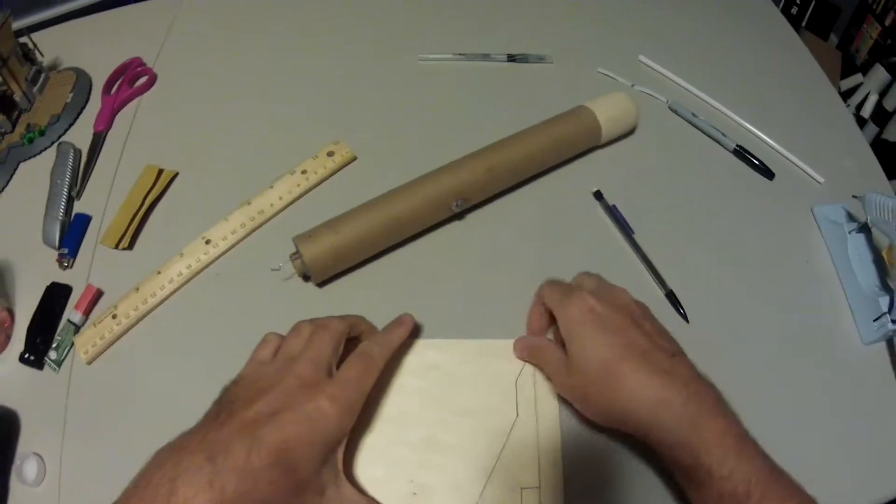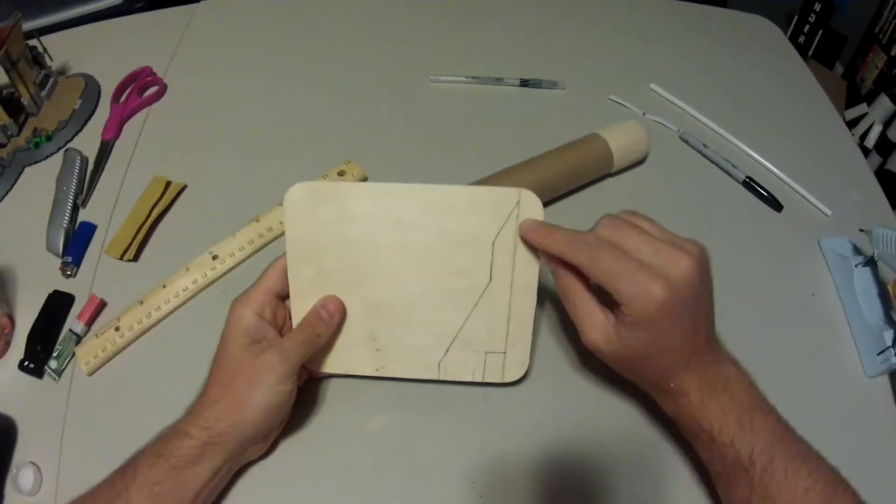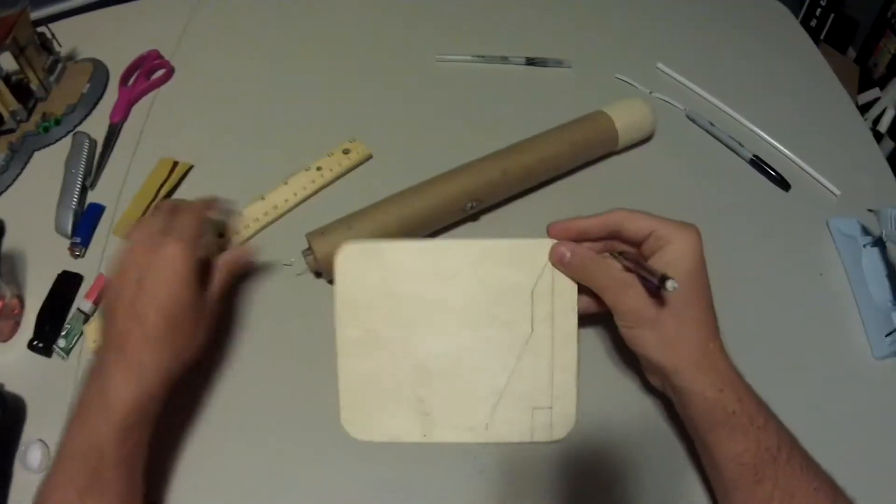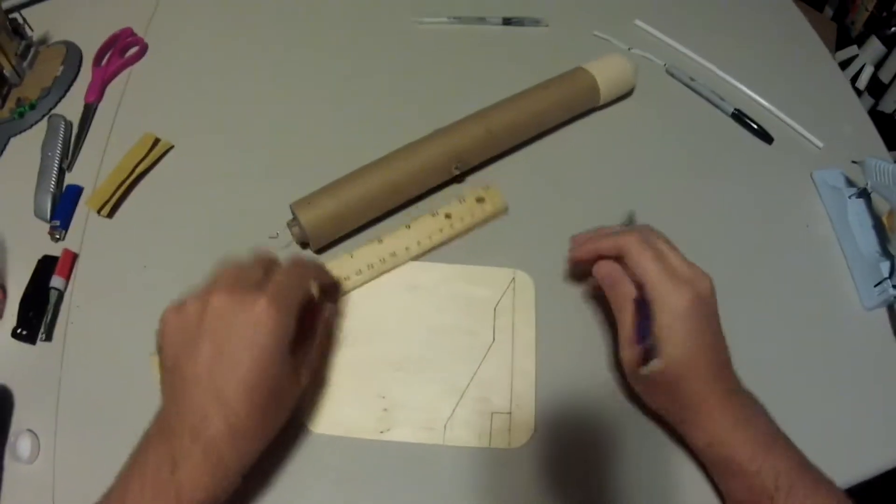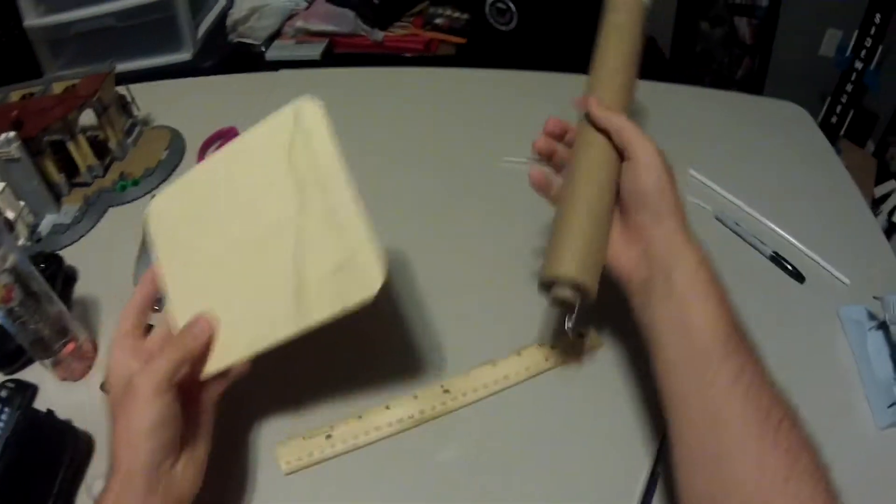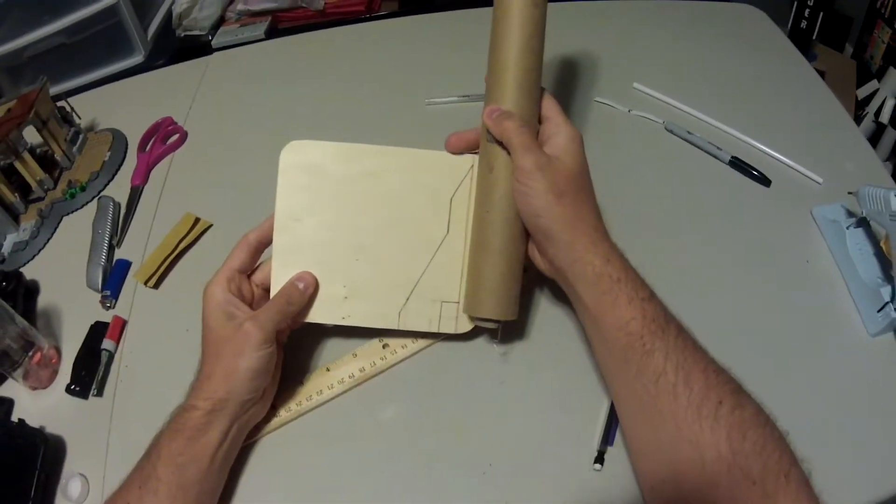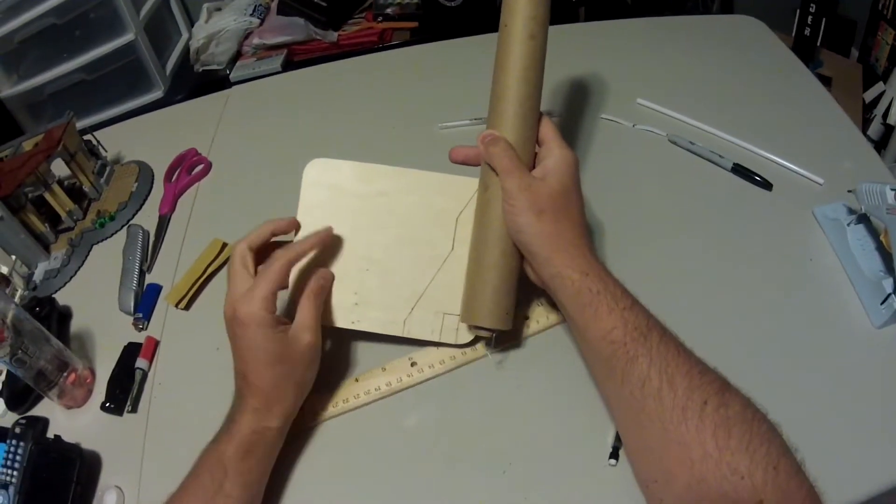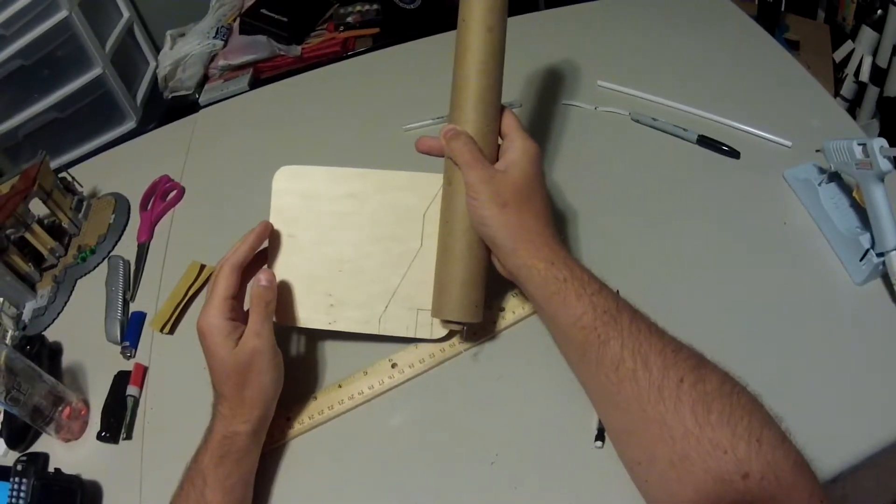Then you're going to need to draw out your design for your fins on your balsa wood sheet. You can see mine is longer and narrower. It's designed to actually protrude past the bottom of the rocket and the engine itself so it can actually stand up on its end. I typically never do rockets this way but I thought it would be nice to do something different this time.